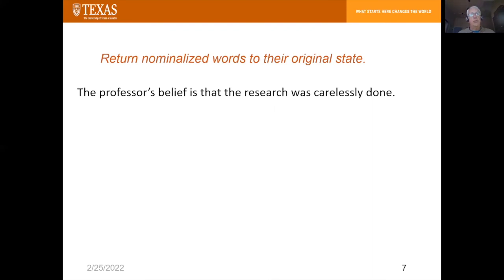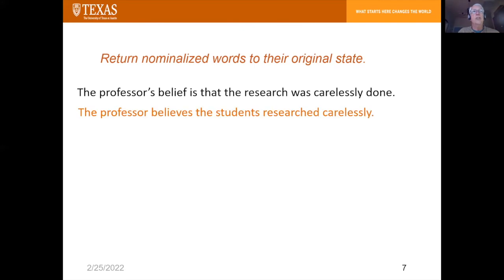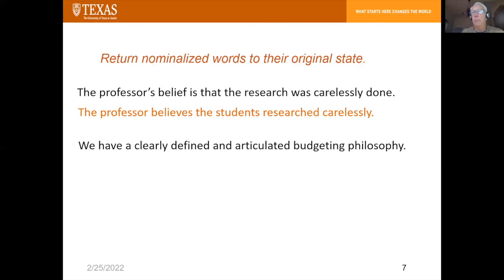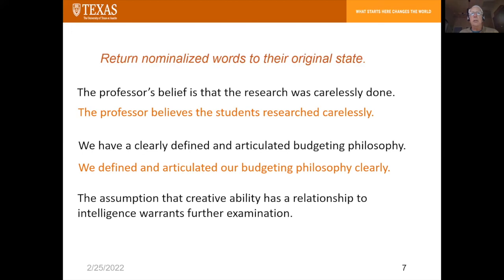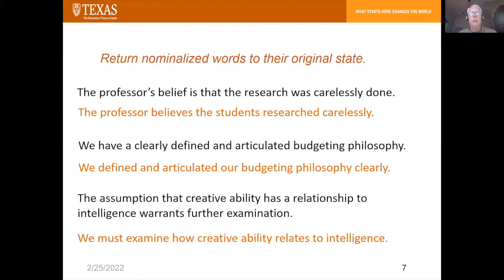Let me give you some examples. 'The professor's belief is that the research was carelessly done' — we can simplify that and make it a little more clear by writing 'the professor believes the student's research was done carelessly.' 'We have a clearly defined and articulated budgeting philosophy' would be better written as 'we defined and articulated our budgeting philosophy clearly.' And finally, 'the assumption that creative ability has a relationship to intelligence warrants further examination' would more plainly be written as 'we must examine how creative ability relates to intelligence.'